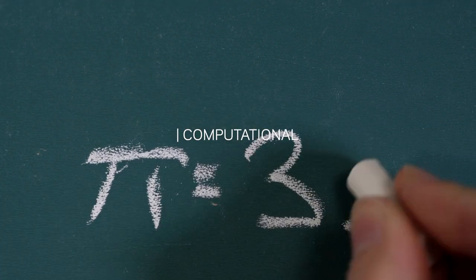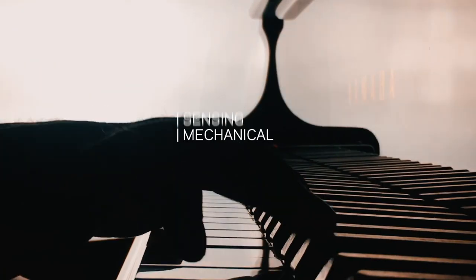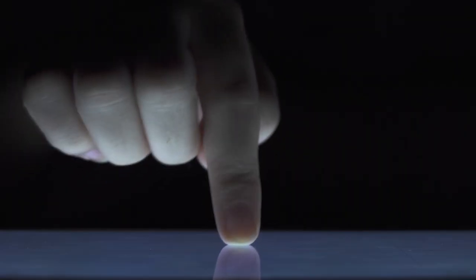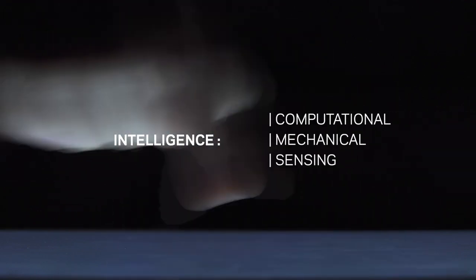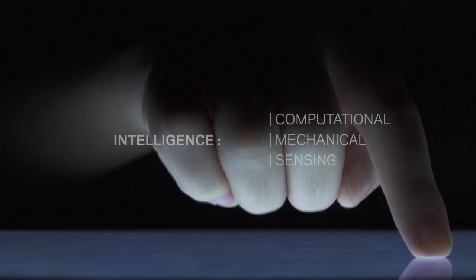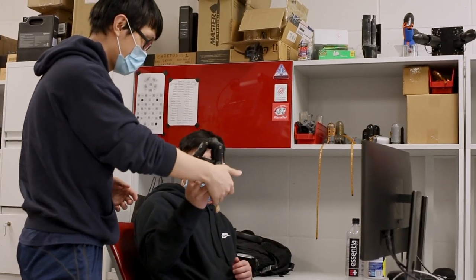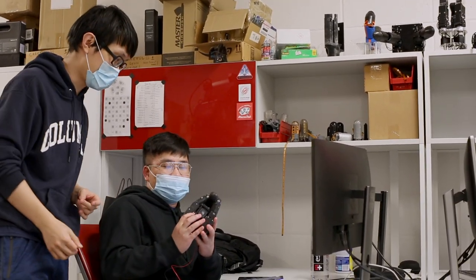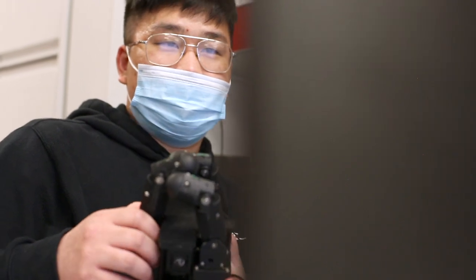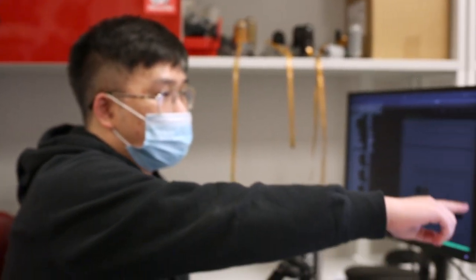The computational intelligence, the mechanical intelligence, the sensing intelligence. In biological evolution, all of these components evolve in lockstep together. So we've been asking, can we optimize the mechanical design of a robot at the same time as the computational policy, with and for each other?